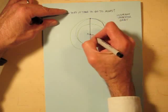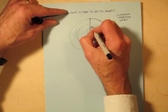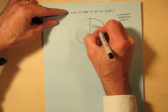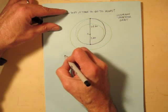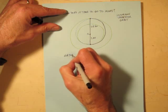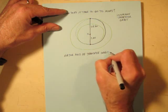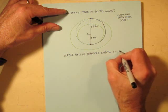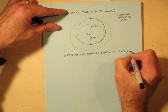And we know the distance from the Sun to Mars is about one and a half astronomical units, 1.5 AU. So the major axis of the transfer orbit is one plus 1.5 or 2.5 AU.